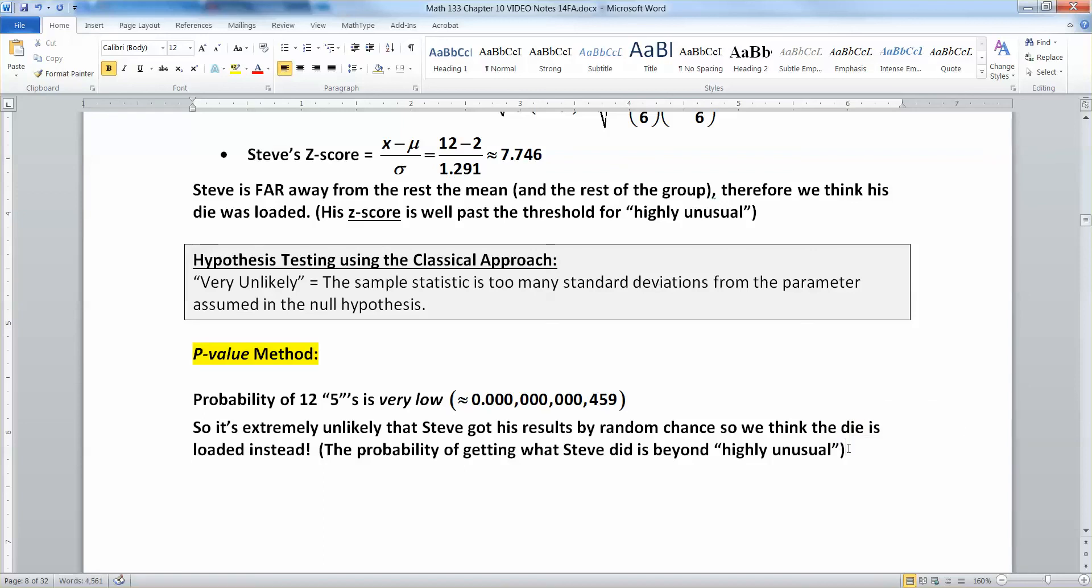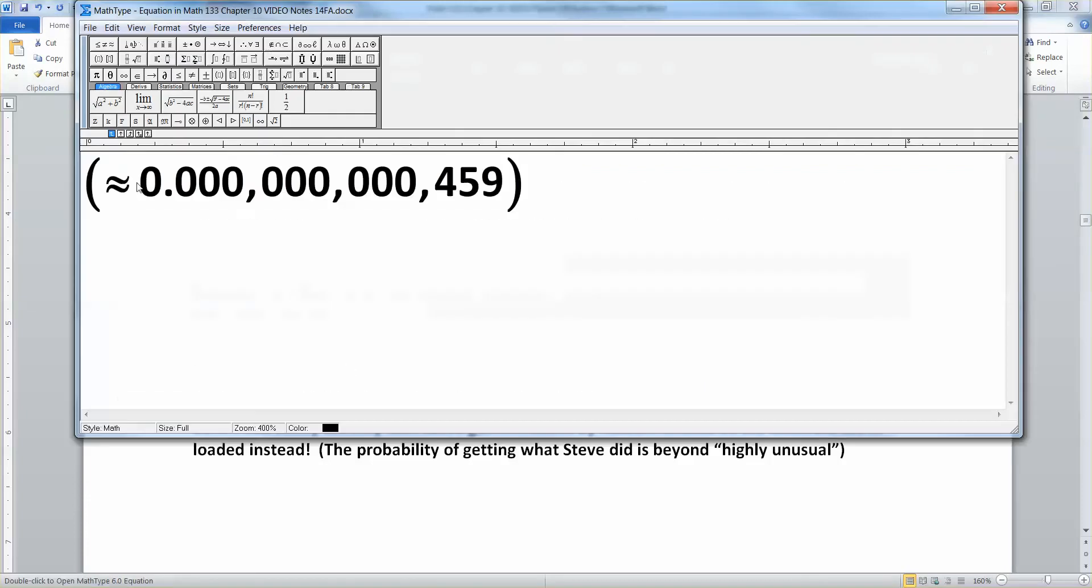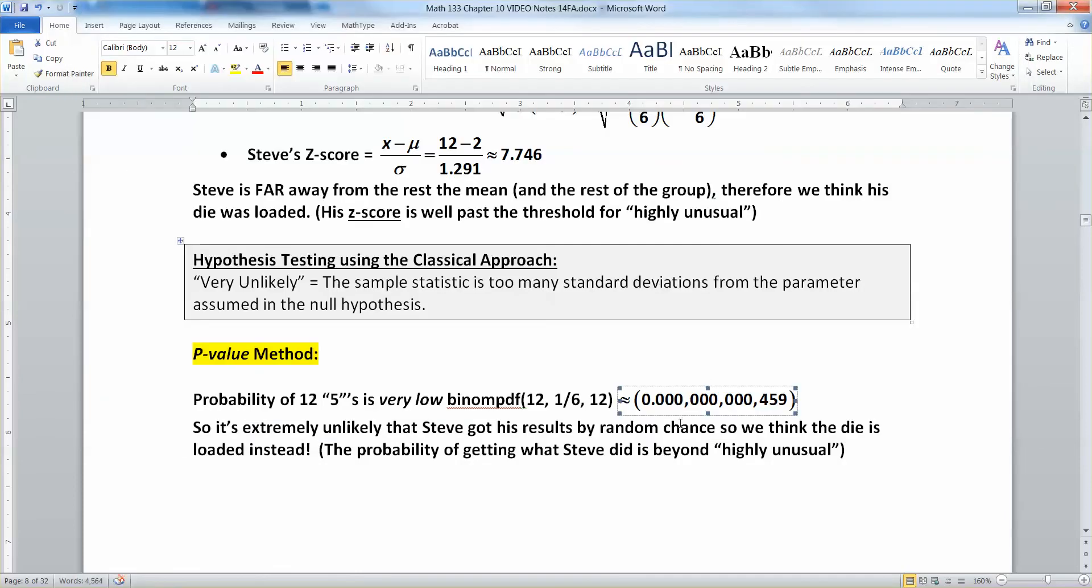So for example, the probability of getting what Steve obtained was found, if you remember, binompdf(12, 1/6, 12), which was approximately 0.0 with lots of zeros and then 459. So very, very, very low. And since it's very low, we know that we can reject the null hypothesis.